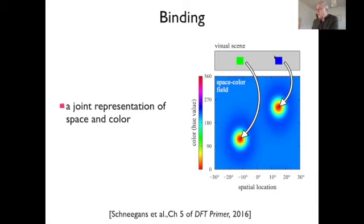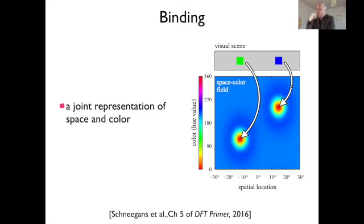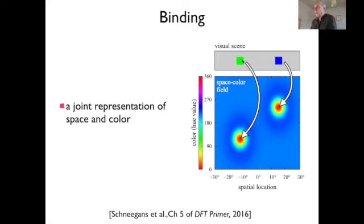If arranged appropriately, a green object at a particular location creates a peak positioned along the horizontal at that object's position and along the vertical at its hue value — combining green with that location, and blue with another location. This could be wired so that from the visual scene there would be localized input in two dimensions at these two locations, representing the two objects. We can call this a joint representation of space and color, or a bound representation — because you know where green is and where blue is.